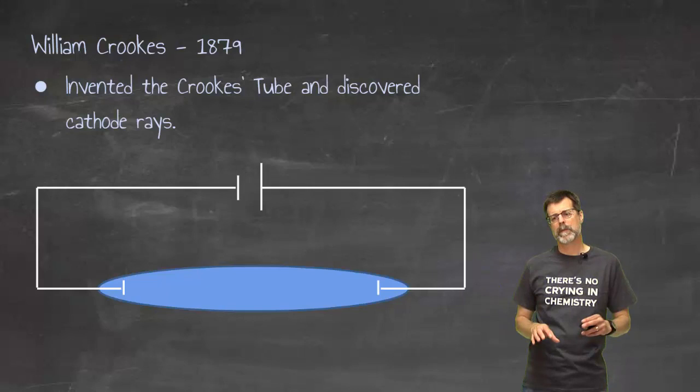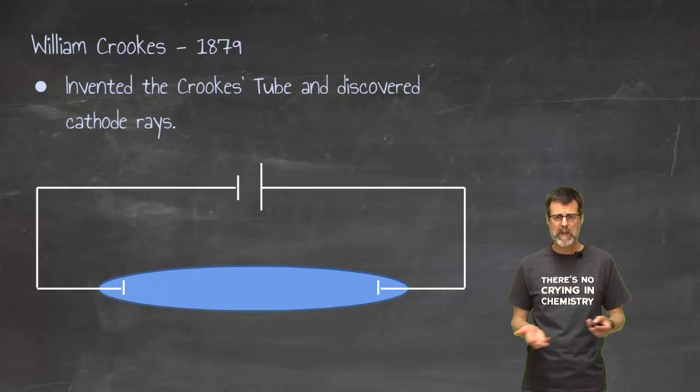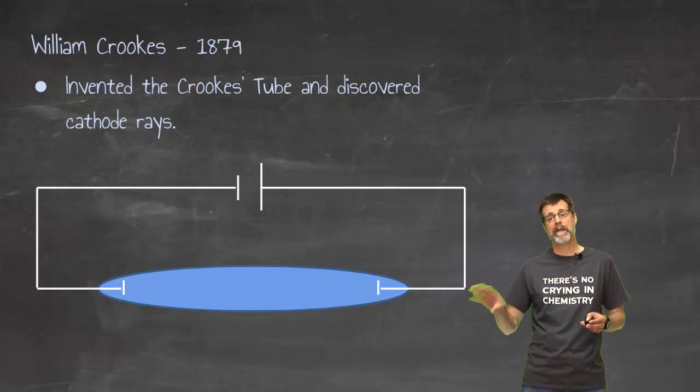A cathode ray tube or Crookes tube looks something like this, and we'll label these parts up in class. Basically what you had was a glass tube with two electrodes in it, and you connected it to power. You vacuumed out the tube so there were zero atoms inside that tube.